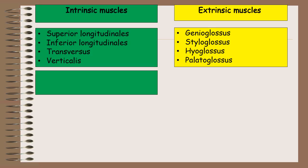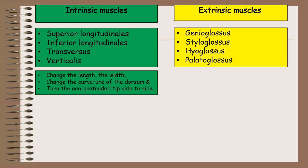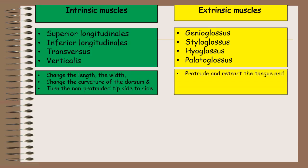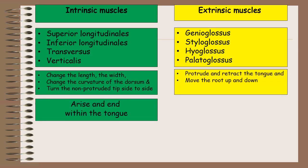The action of intrinsic muscles of the tongue is to change the length and the width, to change the curvature of the dorsum, and to turn the non-protruded tip side to side. The action of extrinsic muscles of the tongue is to protrude and retract the tongue and to move the root up and down.